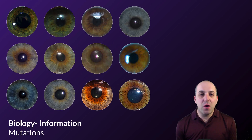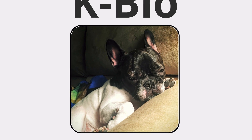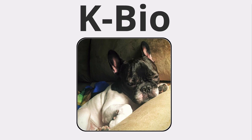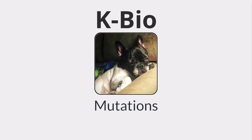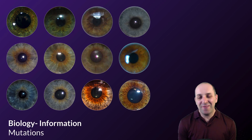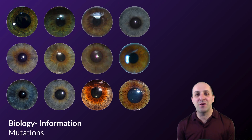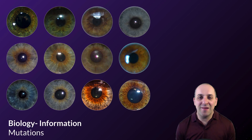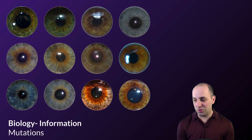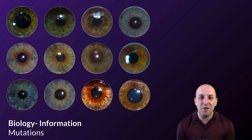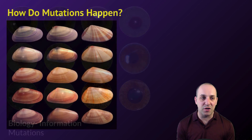Welcome to our video on mutations. I figured I'd start this off with 16 pictures of 16 different colored human eyeballs, because a picture like this really gets at the immense variety in biological systems. And of course, all of that variety is fundamentally the result of mutations.